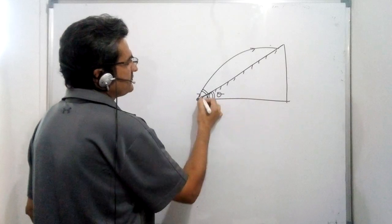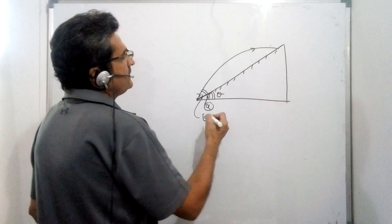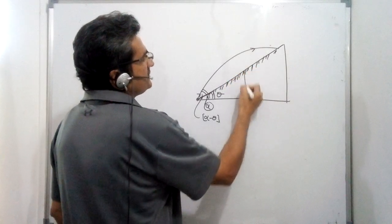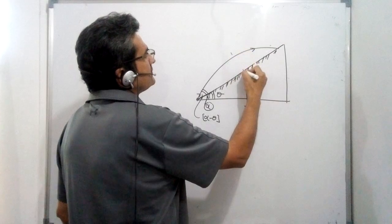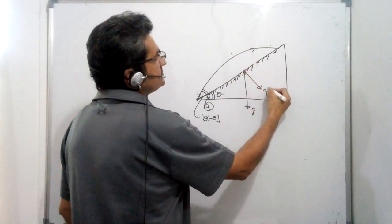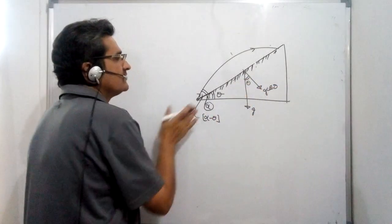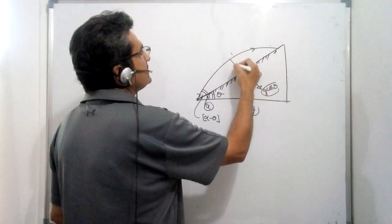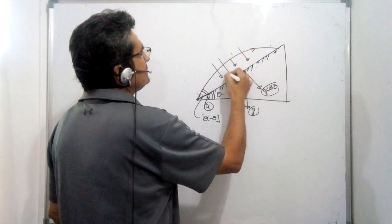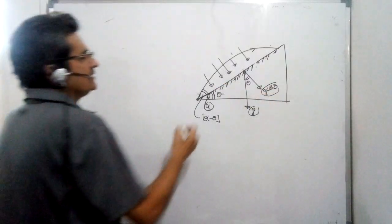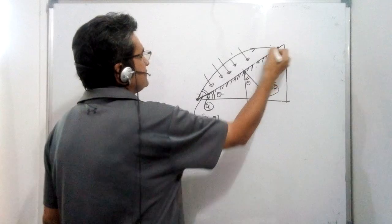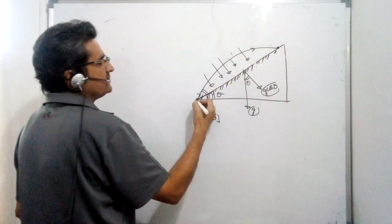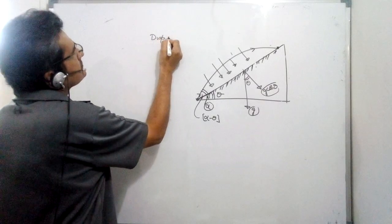The angle between the inclined plane and the projectile direction is alpha minus theta. Now, taking the inclined plane as the reference frame: gravity acts downwards as G, but with respect to the inclined plane the effective gravitational component perpendicular to the plane is G cos theta. With this reference, the starting and ending points share zero net displacement along the direction perpendicular to the plane.